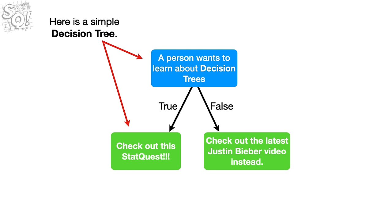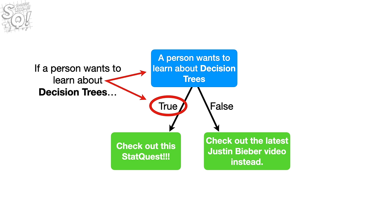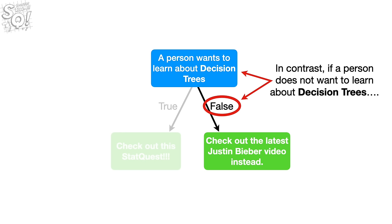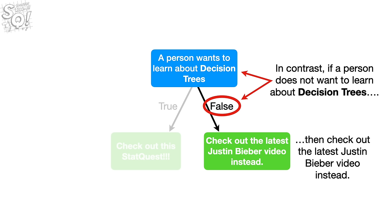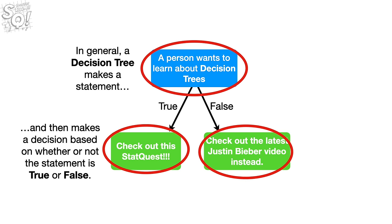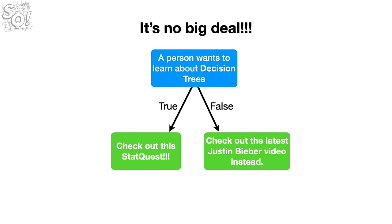Here is a simple decision tree. If a person wants to learn about decision trees, then they should watch this StatQuest. In contrast, if a person does not want to learn about decision trees, then check out the latest Justin Bieber video instead. In general, a decision tree makes a statement and then makes a decision based on whether or not that statement is true or false.